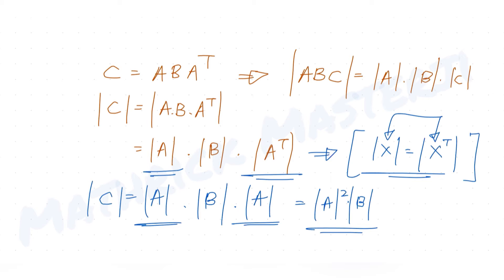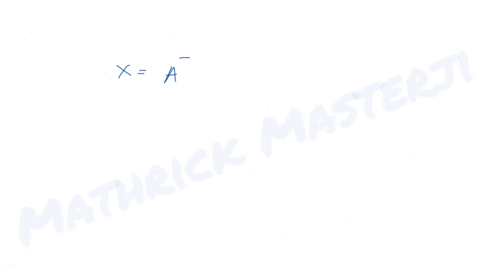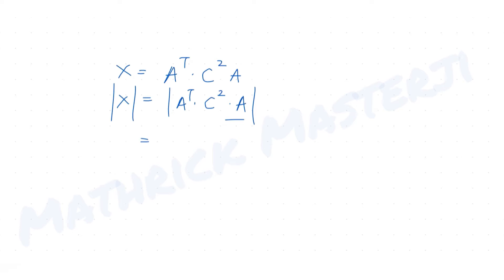Now, we need det(X). From the equation Aᵀ·X = Aᵀ·C²·A, we get X = Aᵀ·C²·A. So finding det(X) means finding the determinant of the product Aᵀ·C²·A, which equals det(Aᵀ)·det(C²)·det(A).